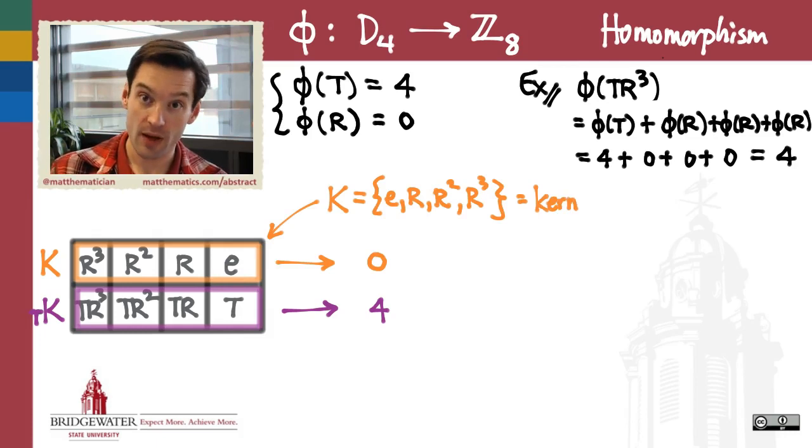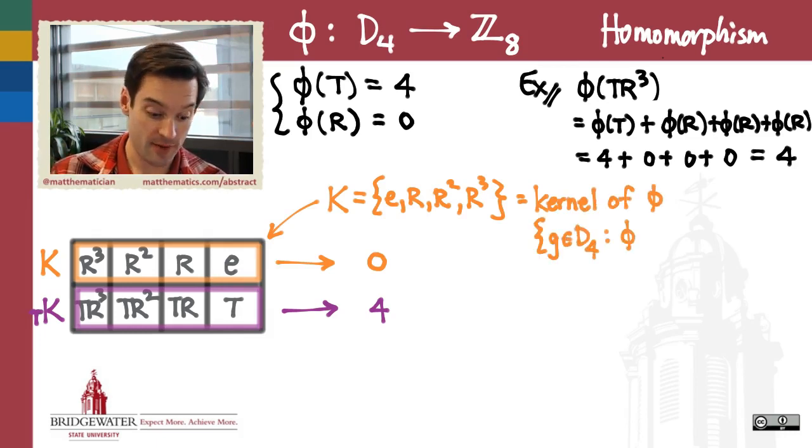We call that the kernel of the homomorphism φ. The kernel is just the set of everything which is getting collapsed to the identity element by this homomorphism—the set of all elements of my domain such that φ of that element is equal to the identity element of the range, which in this case is 0.